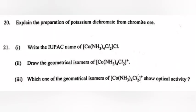Part 3: Which one of the geometrical isomers of [Co(NH3)4Cl2]+ shows optical activity? Answer: Cis-isomers.